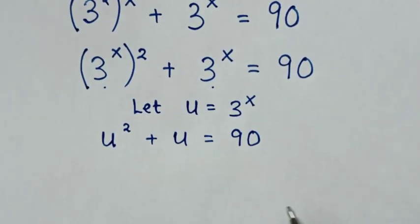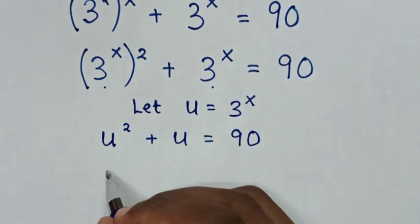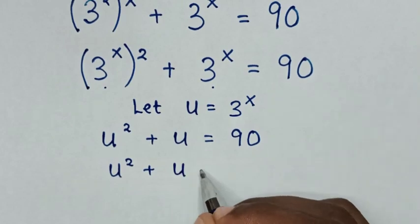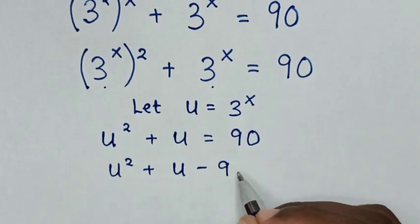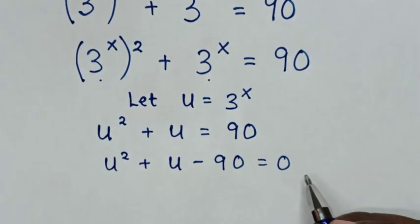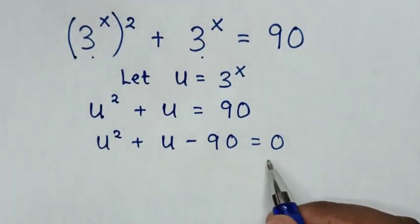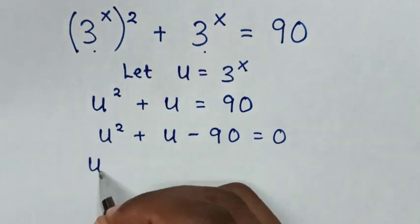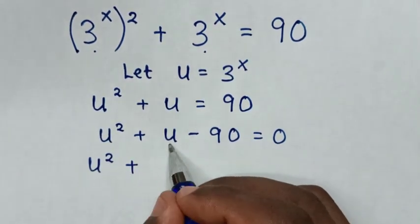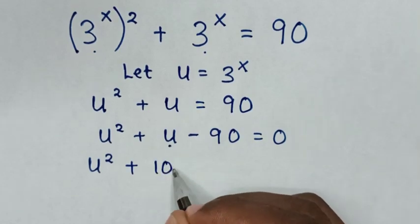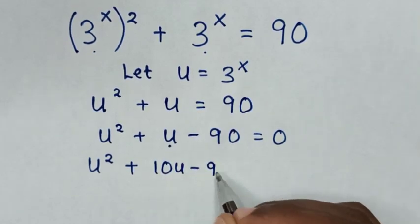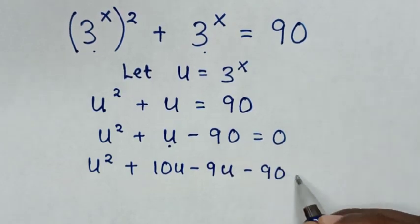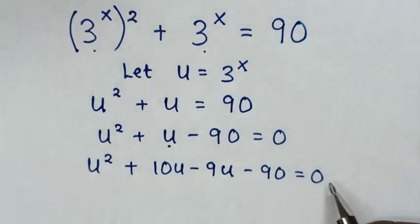In the next step, we take 90 to the left side, so it will be u squared plus u minus 90 is equal to 0. Then from this quadratic equation we solve by factorization, so it will be u squared plus u, which is the same as 10u minus 9u, then minus 90 is equal to 0.